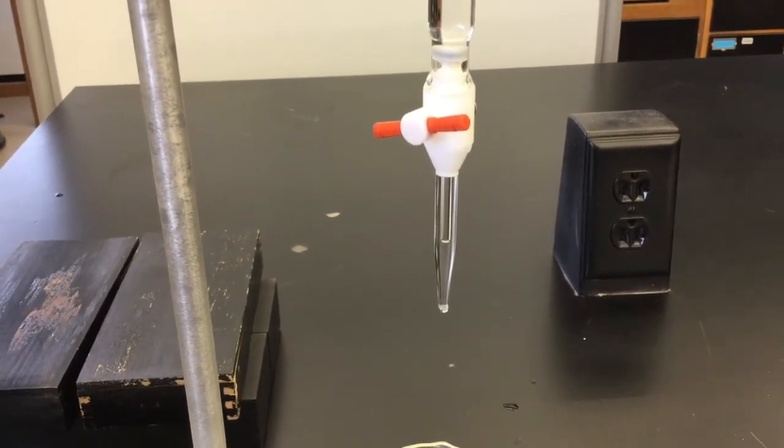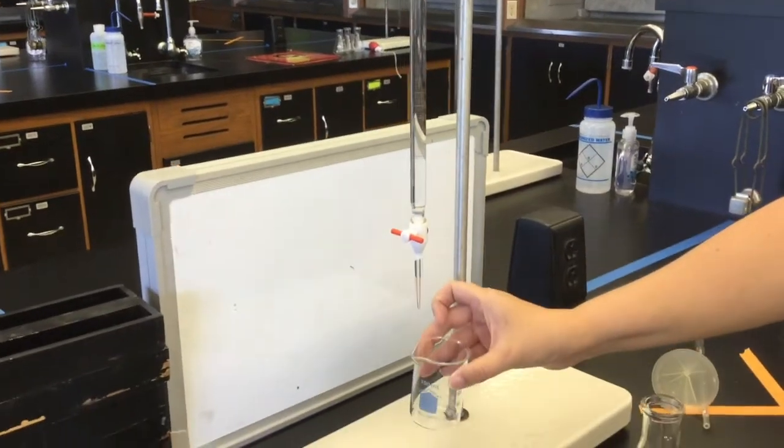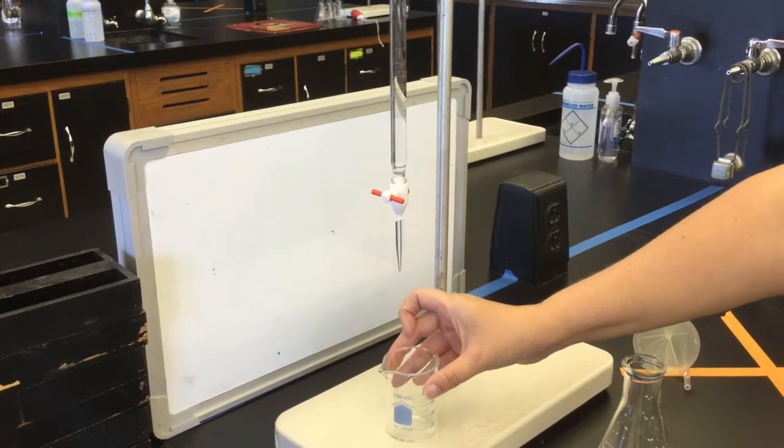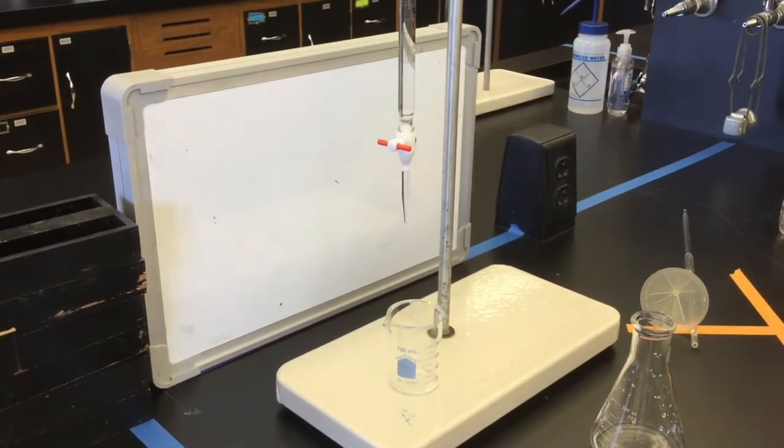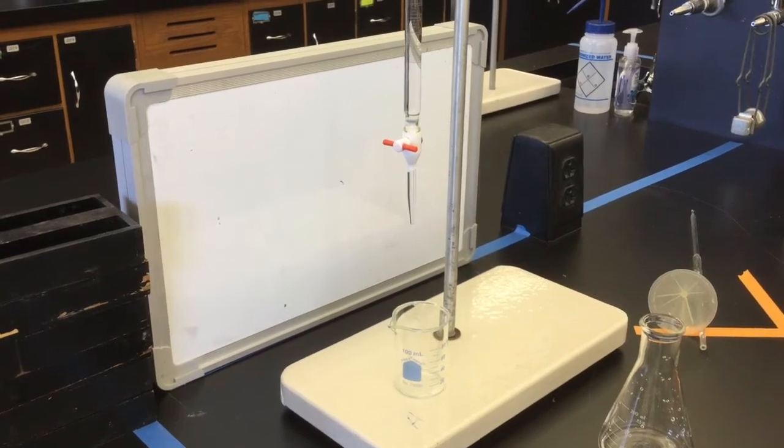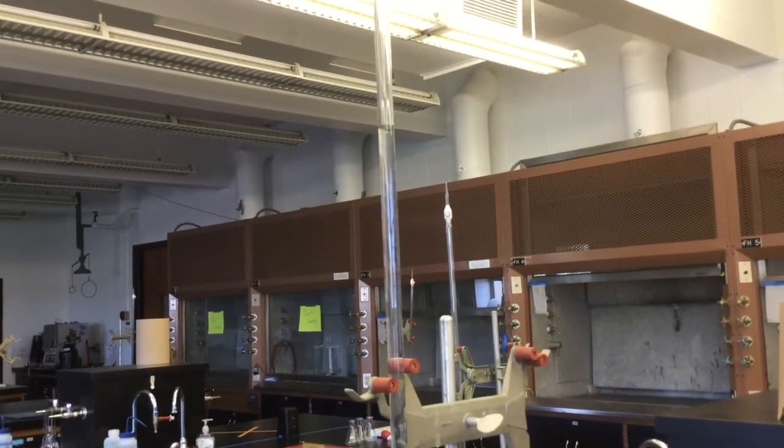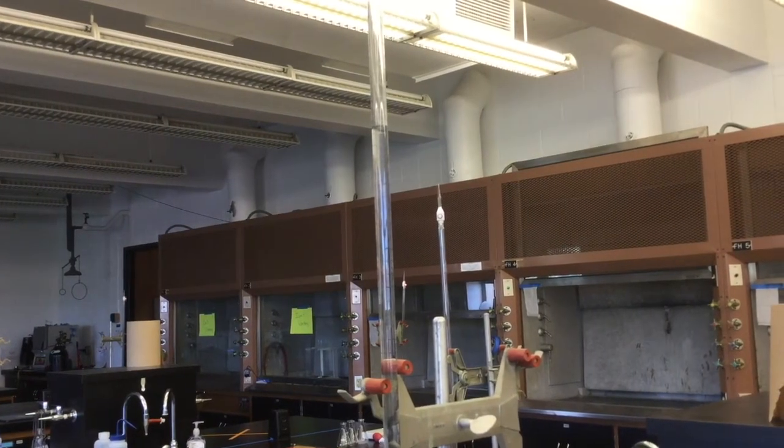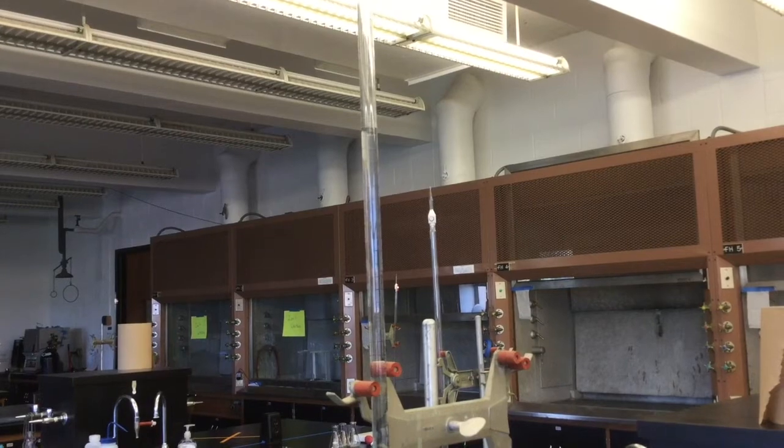So we want to make sure before we start that the air bubble is gone. Take one of the small beakers from your drawer, place it underneath the burette, and then open the valve for just a second to make sure all the bubbles come out. Check again to make sure that you're still above the 10 milliliter mark before you proceed. You only need to use a little bit of the sodium hydroxide in order to clear out the bubble.